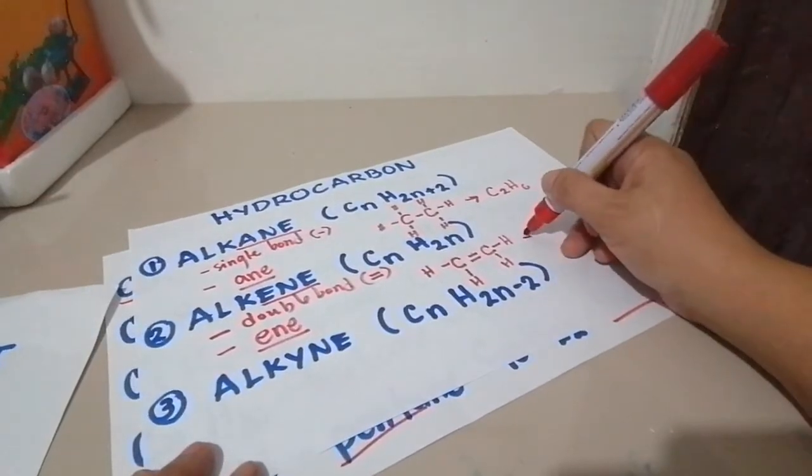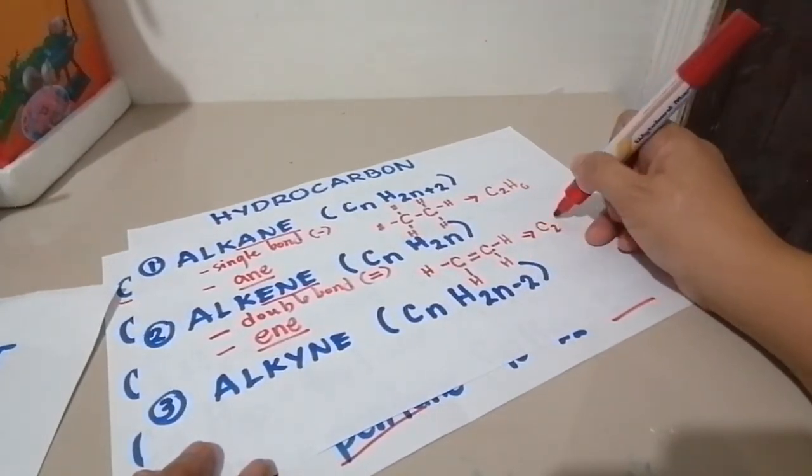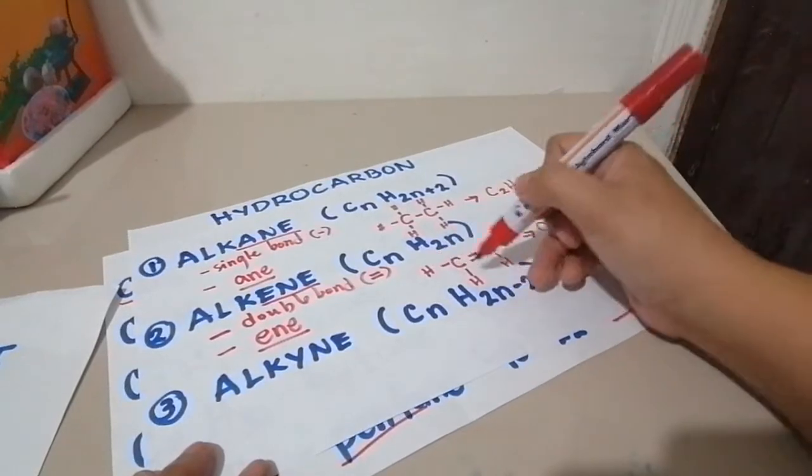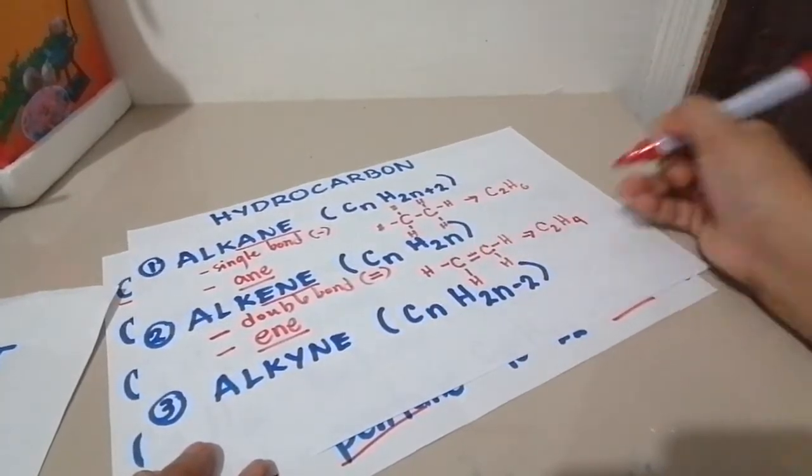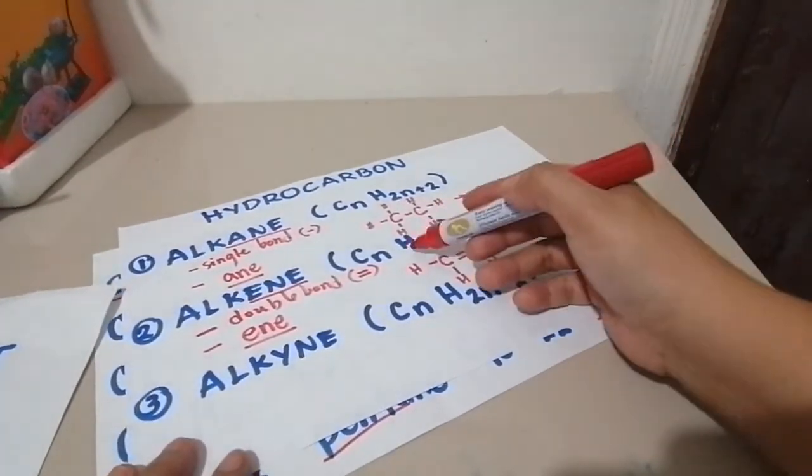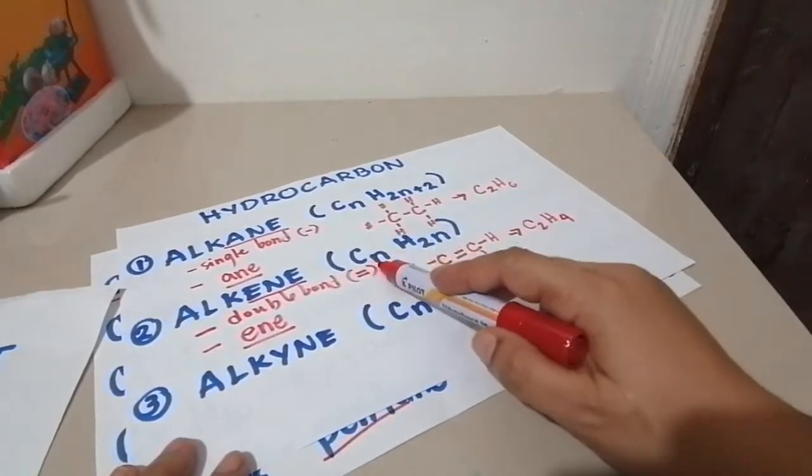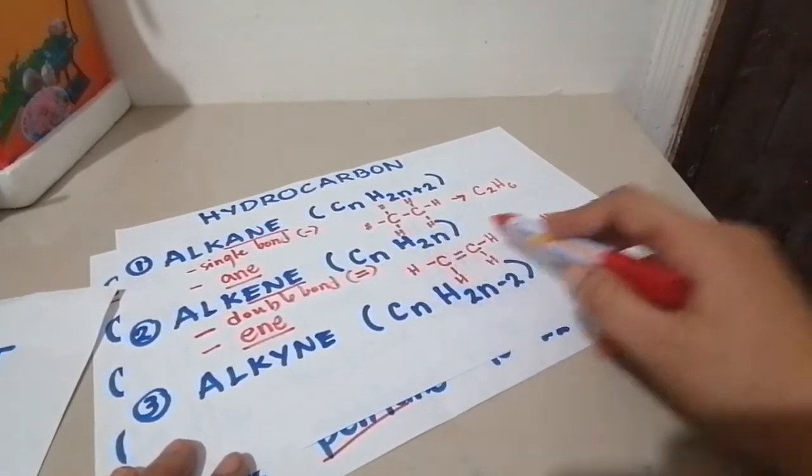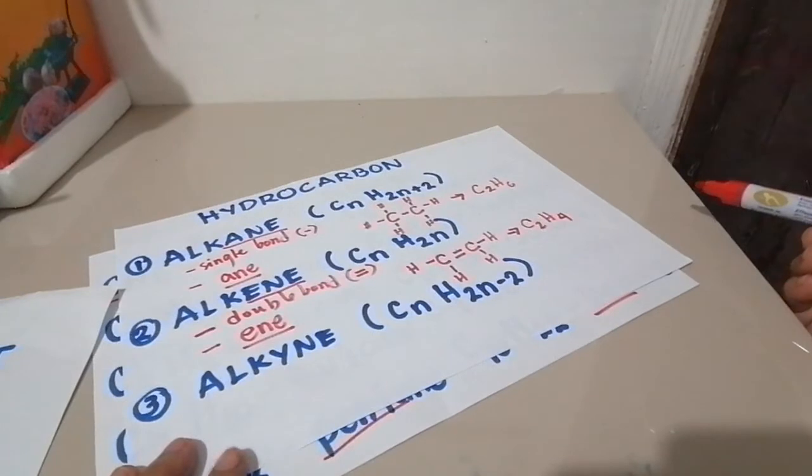Now, if we're going to write this, this can be C2H, how many H? 1, 2, 3, 4. So 4. To check if it's correct, carbon is 2, so 2 times 2 is 4.